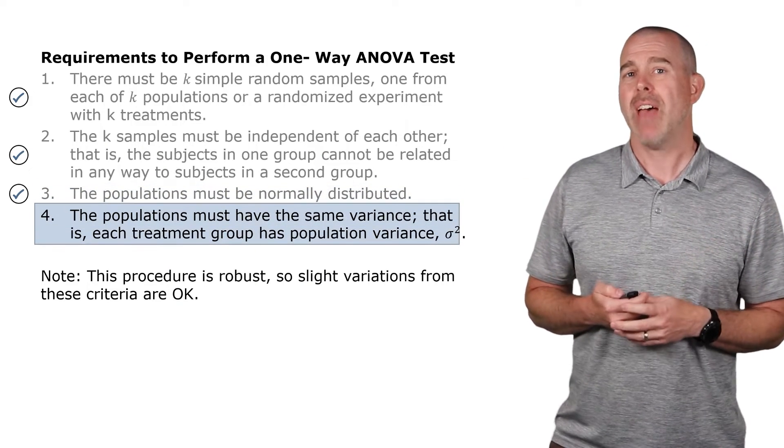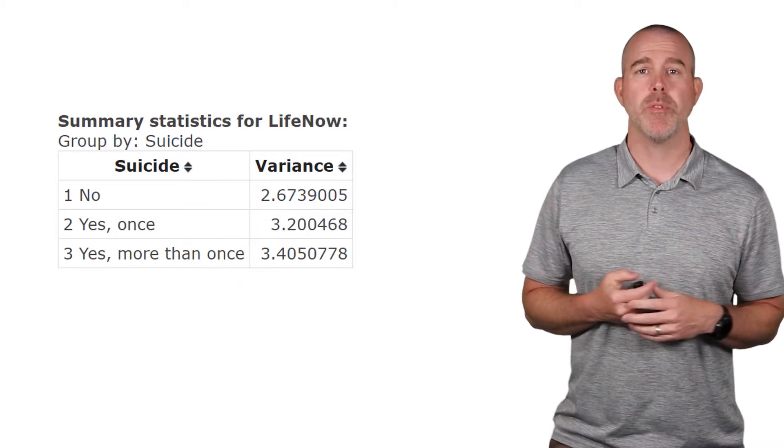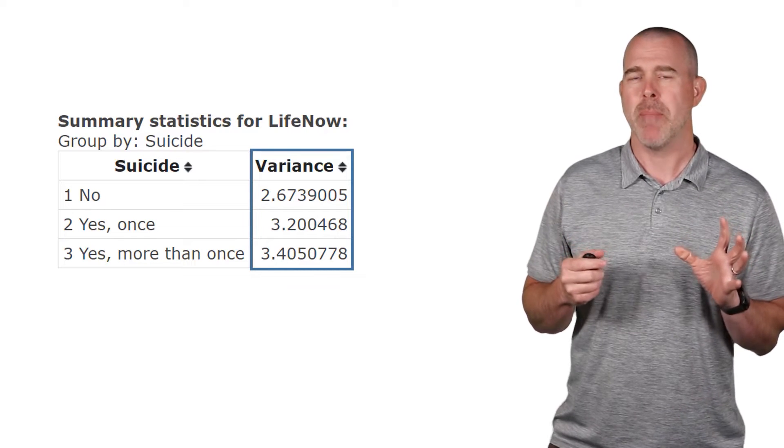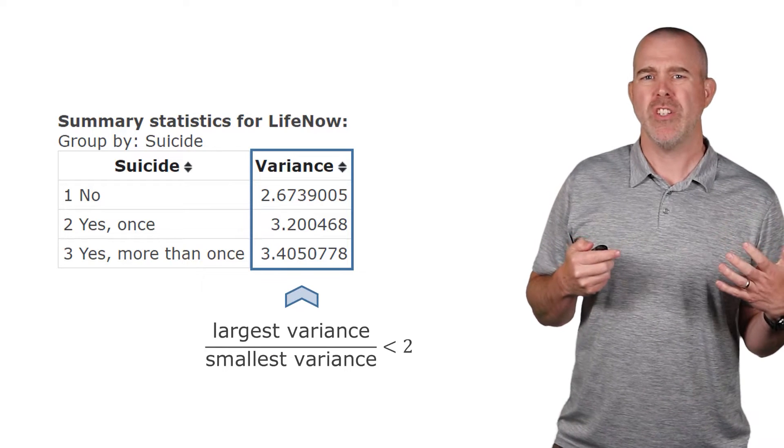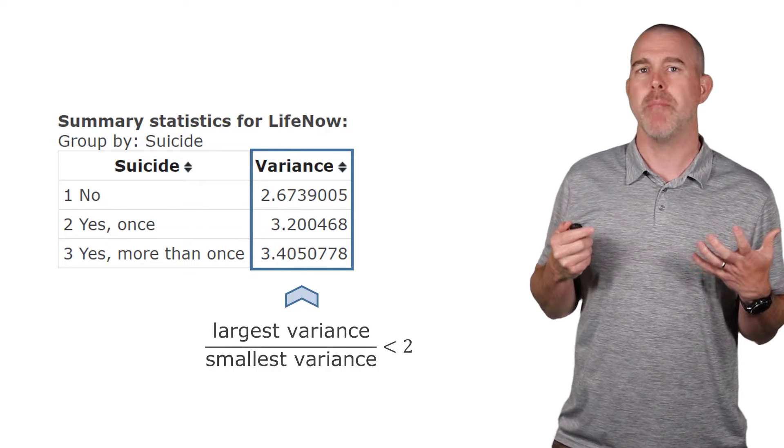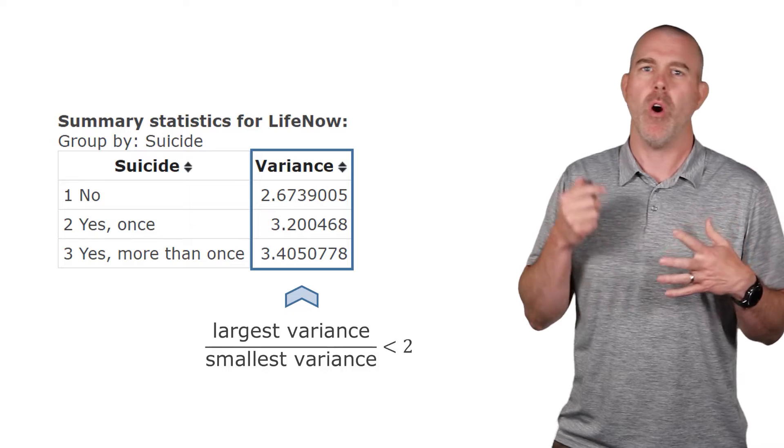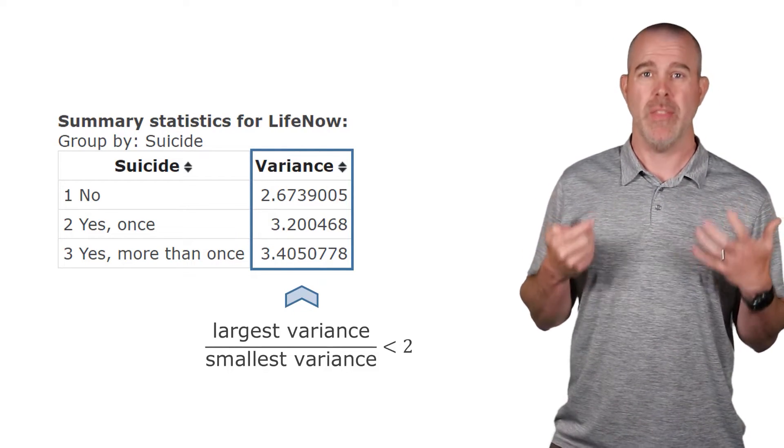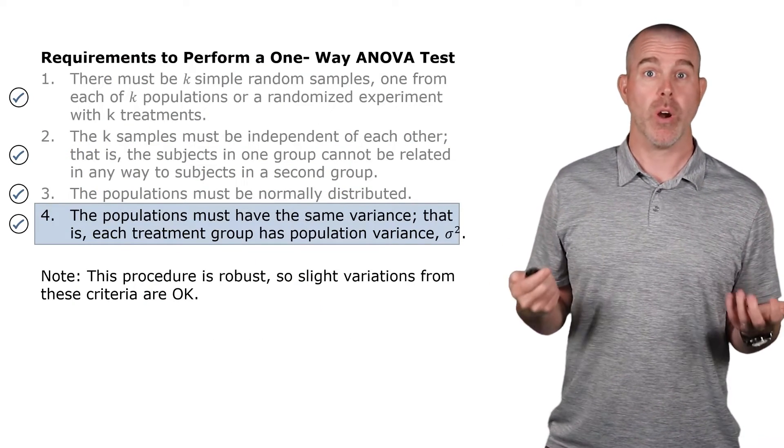The last one, they have to have the same variance. So I used StatCrunch to find the variance, and I grouped by suicide. And you can see here, they're not all the same. So a good guidance here is to find the variance ratio of the largest variance over the smallest variance, and you don't want that to be more than two. In this case, you can see we have 3.4 over 2.7, definitely less than two. So we're going to say that's okay, and this test should work. We should be able to do an ANOVA test.